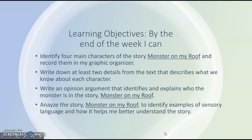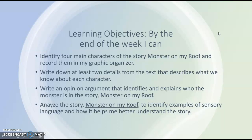Our learning objectives for the week are to be able to identify the four main characters of the story 'Monster on My Roof' and record those in your graphic organizer. In addition, you need to come up with two details from the text that describe what you know about each character, so you should have about eight details — two for each character. Then you're going to be able to write an opinion argument, which is a paragraph where you will argue which character is the monster in the story 'Monster on My Roof.'